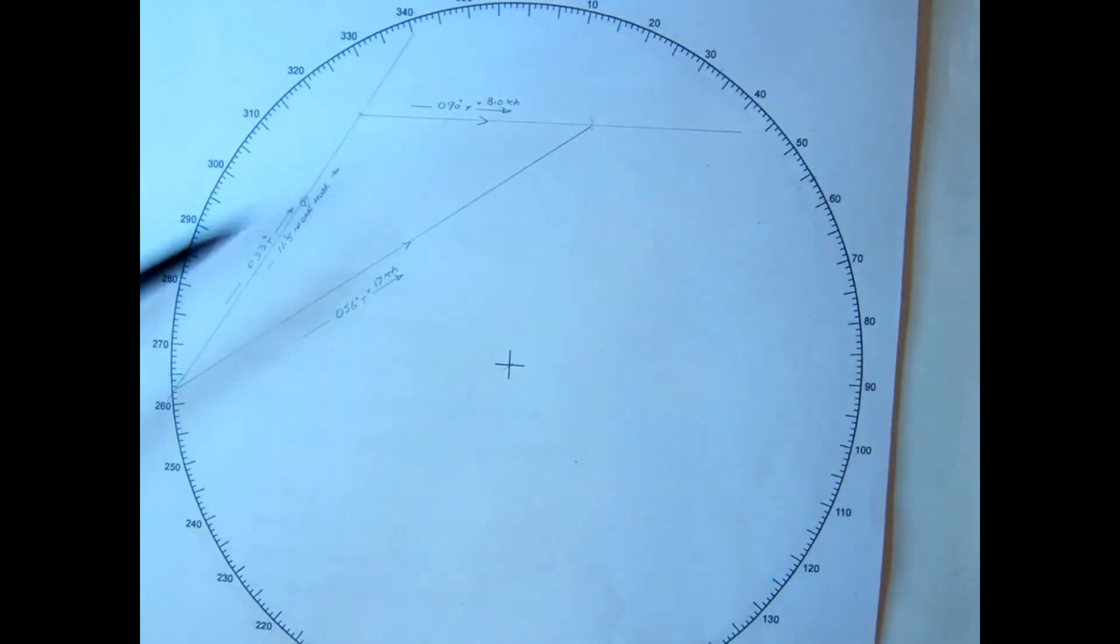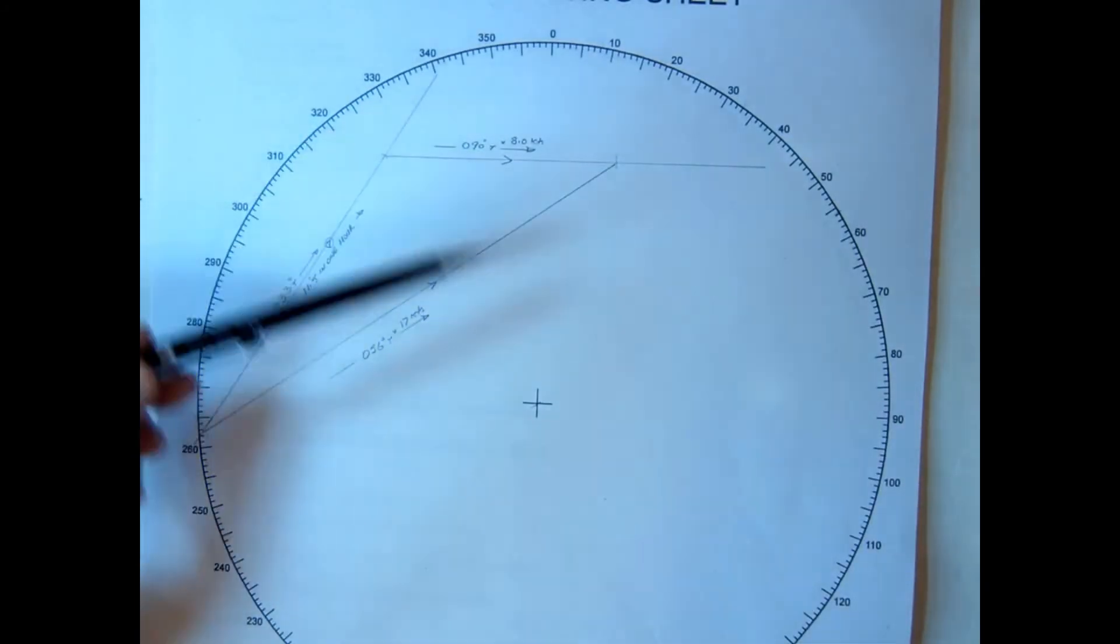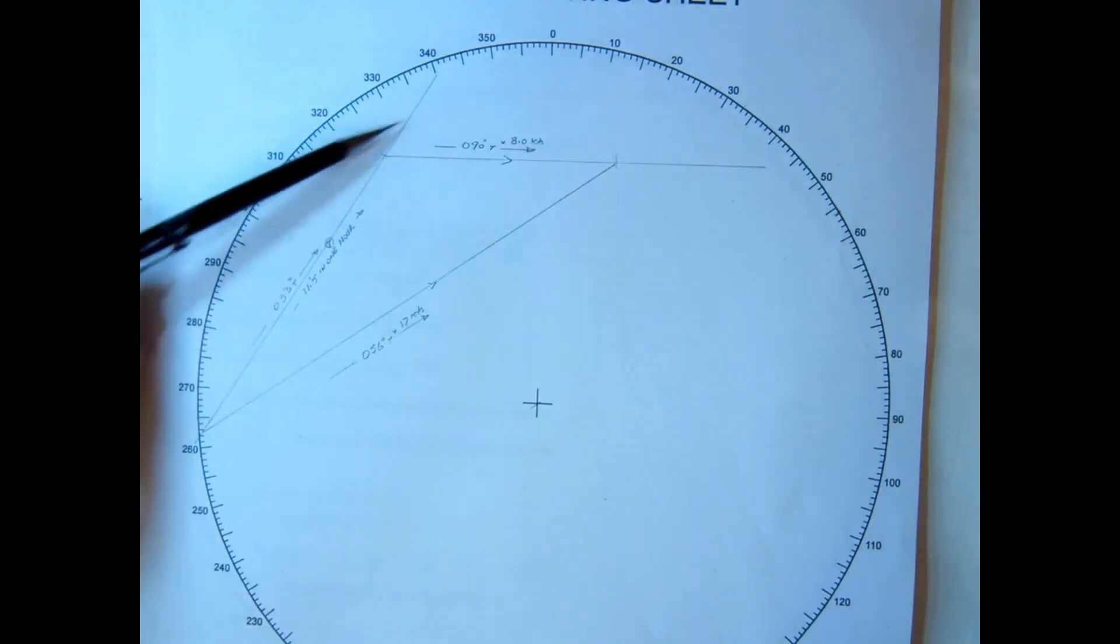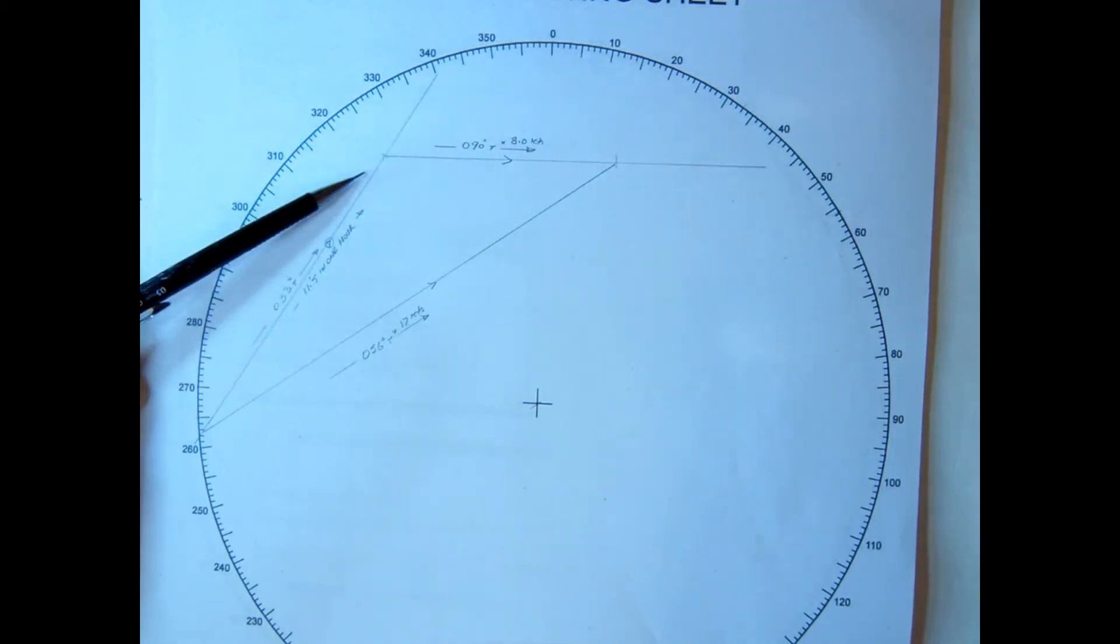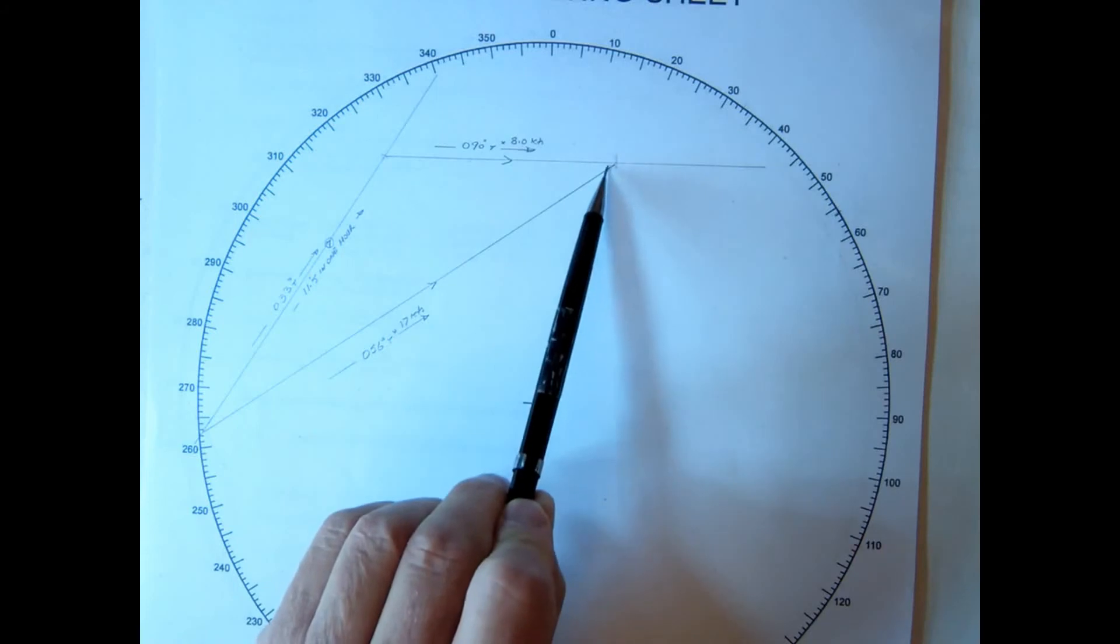Now on this triangle we do know the bearing between us is 033. Now you can draw this anywhere on here, I've just chosen this area here so I can take it away from this part to show you clearly. So there's 033, just drawn it, no distance marked, just 033 in the first instance. Then at the top here I've marked 090 at 8 knots.